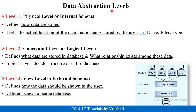Now the next topic is data abstraction levels. Data abstraction means to show only essential information to the user and hide irrelevant information. There are three levels: physical level, conceptual level, and view level. For exam purposes, the diagram of these three levels is one of the most important things to remember.